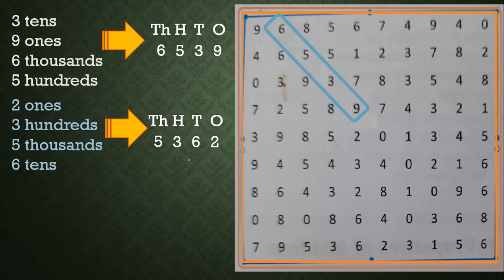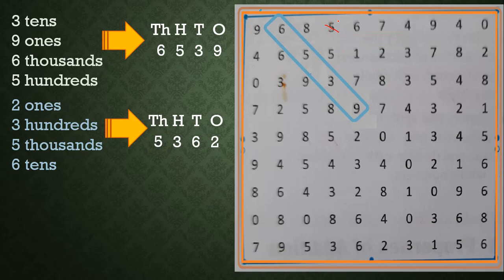Now we search for 5362 in the grid. We look at the digit 5 and search horizontally, vertically, and diagonally. For the first 5 — horizontally no, vertically no, diagonally no. For the next 5 — horizontally not found, vertically not found, diagonally not found either. So we skip these fives.